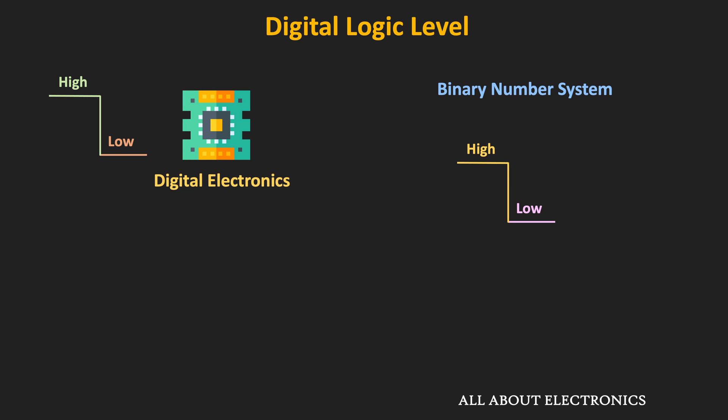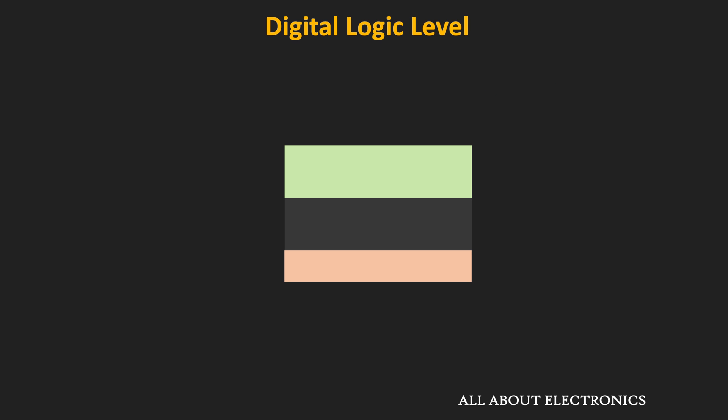The logic high or high voltage level is represented by binary one, and the logic low or low voltage level is represented by binary zero. In terms of voltage, high could be five volts and low could be zero volts. But in reality, logic one and logic zero are represented by a voltage range rather than a particular level. For example, a signal within the range of two volts to five volts can be considered logic one, and a signal within zero to 0.8 volts can be considered logic zero. As long as the signal level is within a certain band, it can be identified as either logic zero or logic one.